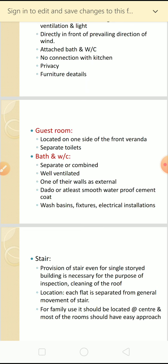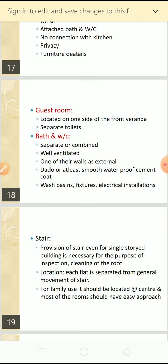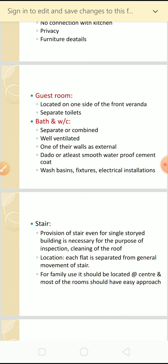The bathroom and water closet should be separate or combined as per requirement, well ventilated, and have external walls - in apartments you can see washrooms are placed beside ducts because of pipeline considerations. At least smooth waterproof cement coating should be given. Wash basins, fixtures, electrical installations, geyser, and proper 15-amp switchboards should all be provided.